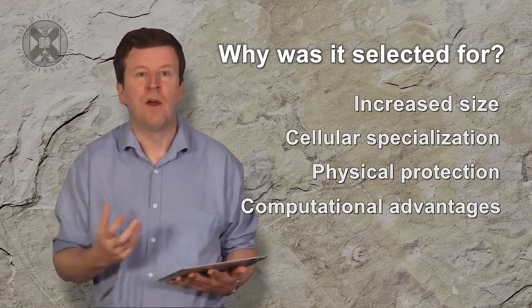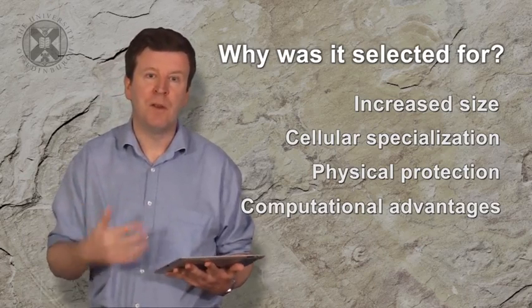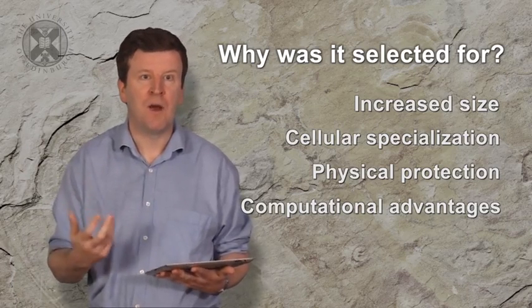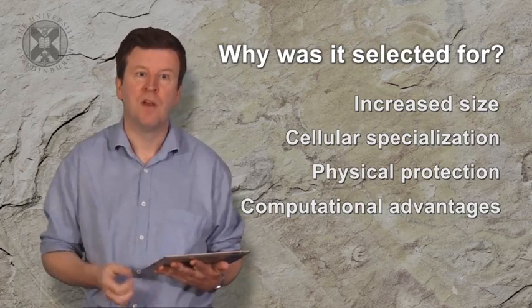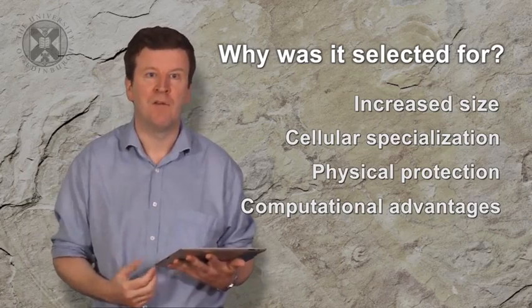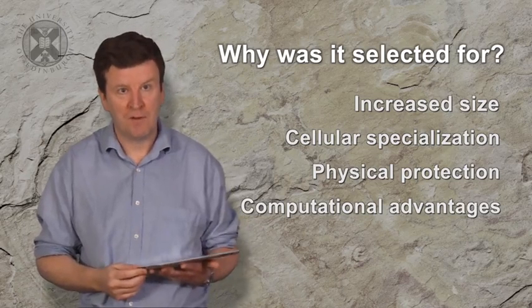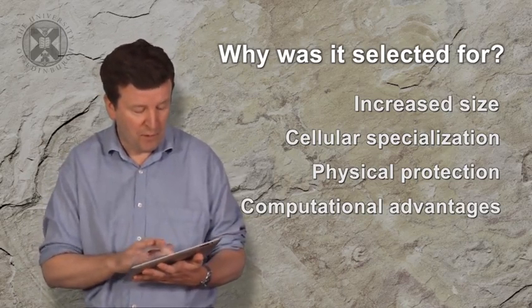All of these things would have allowed multicellular life to have been successful on the Earth. And once it had emerged, selection pressures, evolutionary selection pressures, would have allowed that multicellular life to persist and give rise to the diversity of multicellular life that we see on the Earth today.